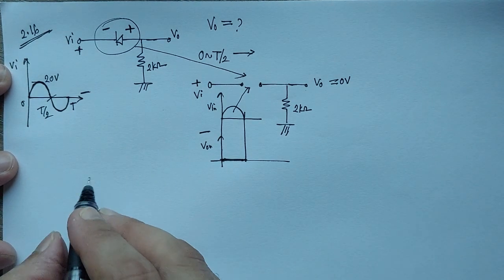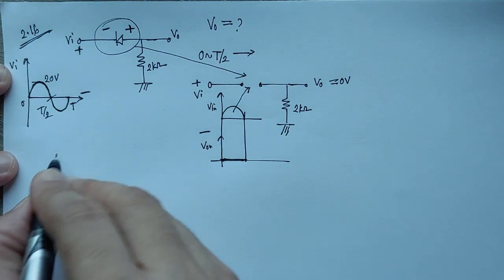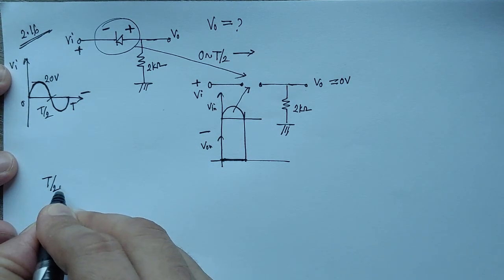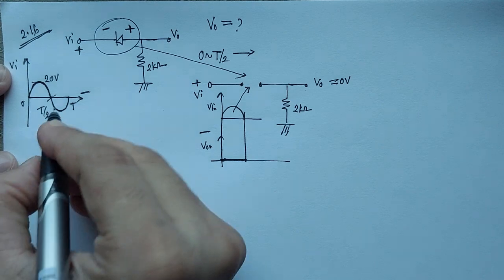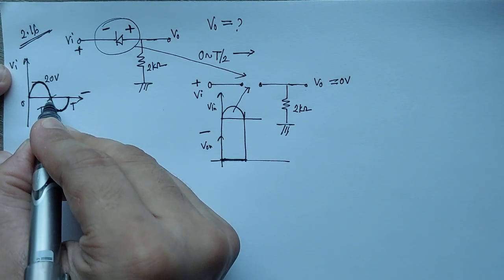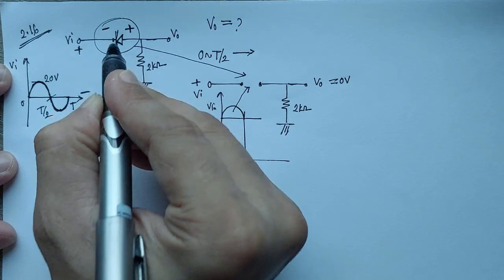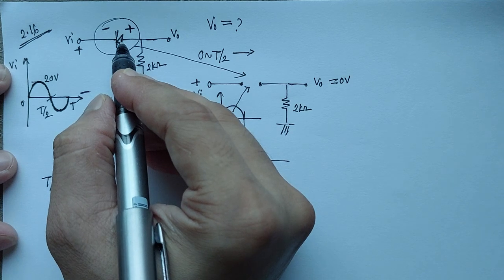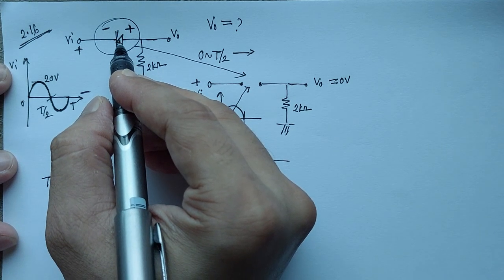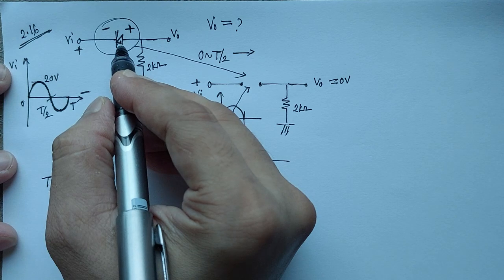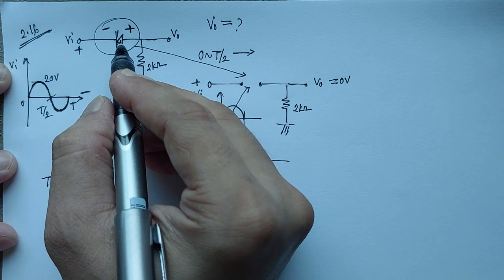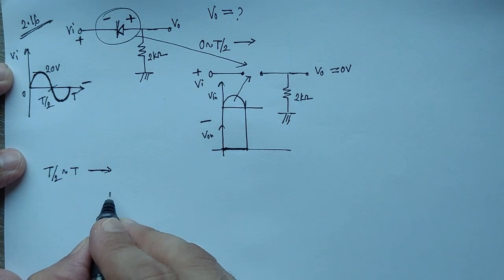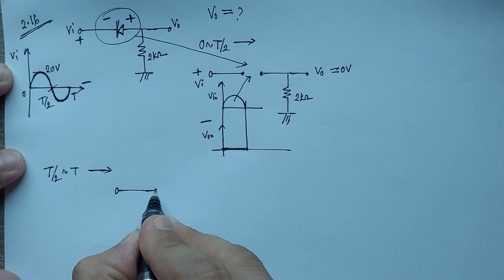Now let us draw the equivalent circuit for the second half cycle, that means from T/2 to T. During this negative voltage, due to the polarity of the diode, the negative voltage will trigger the diode on. That means the diode will operate and it will be replaced by a short circuit. Let's assume this is an ideal diode, so there will be no voltage drop.